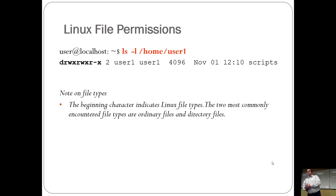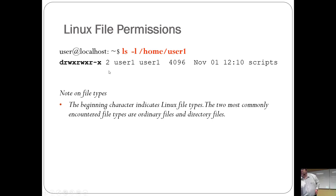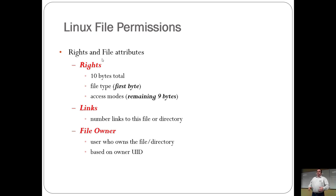When you do an ls -l, it shows a bunch of different things. The very first set of characters — those are the permissions. The very first 10 bytes: the first byte tells you what kind of file it is, and the rest are the access modes, also known as permissions.